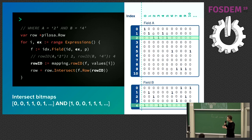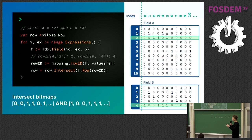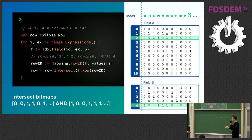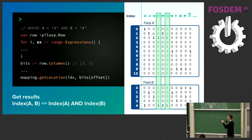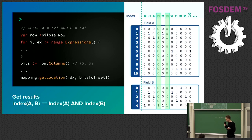When you query — say, get all data where A is 2 and B is 4 — you iterate through the expressions, go to the fields, and find the row IDs where value 2 and value 4 are stored. Since it's an AND, you do an intersection of those rows. As a result, you get only the columns where the bit was set in both rows. The resulting column IDs (e.g., 3 and 5) are then looked up in your mapping to retrieve the actual record locations.